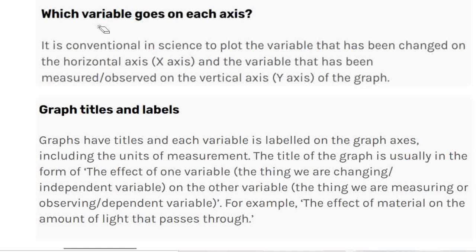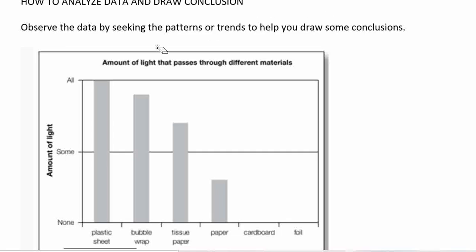When plotting a graph, we have to decide which variable goes on each axis. In science, it is conventional to plot the independent variable on the x-axis (horizontal axis) and the dependent variable on the y-axis. Don't forget to put the graph title and labels so the reader will understand what the graph is displaying. The title should follow the format: 'The effect of one variable on another variable.' For this graph, the title is 'The effect of material on the amount of light that passes through.'